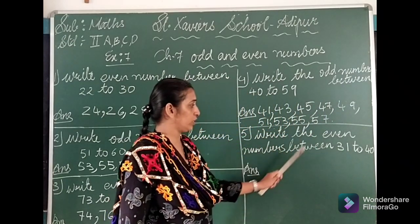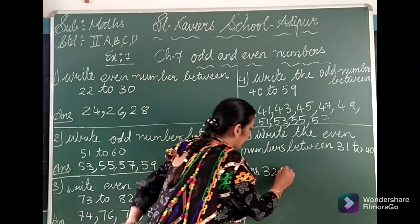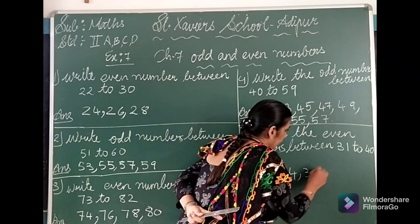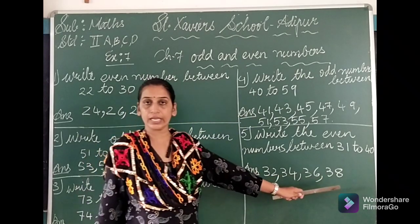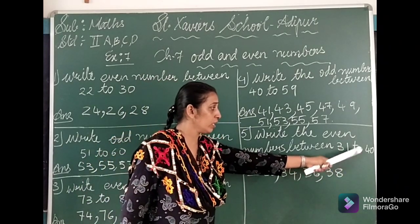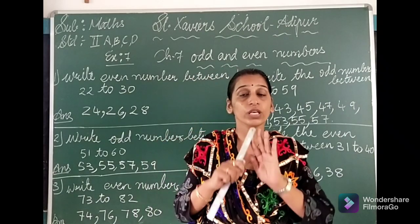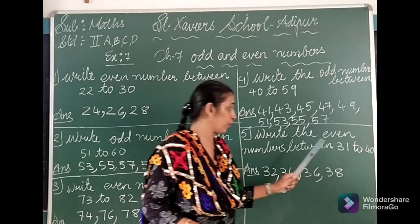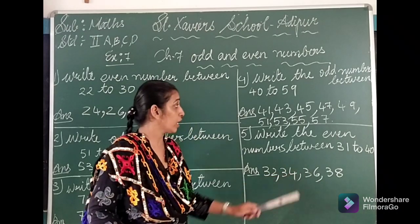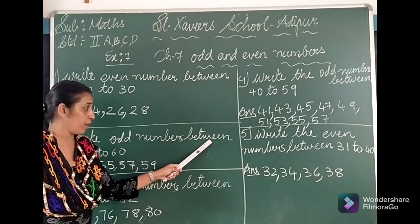Write the even numbers between 31 to 40. After 31 comes 32, which is even. 33 is not even. 34 is even. 35 is not. 36 is even. 37 is not. 38 is even. We will not write 40 because 40 itself is the given boundary number. The key thing to keep in mind is we write only the 'between' numbers.